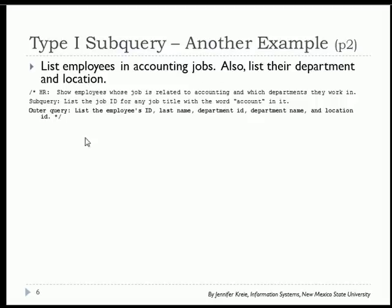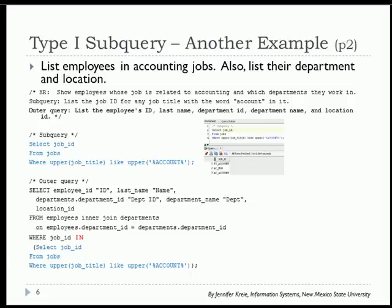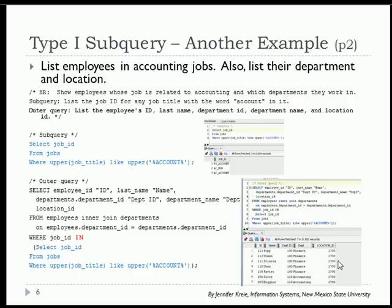In the second part, we do the outer query where we list the employee's ID, last name, department ID, name, and location ID. I take that subquery from the previous slide and embed it in the where clause. The outer query works with employees and departments, and I do a where clause looking at job_ID in the employee table comparing it against job_ID from the subquery, which gave us a list of three. The result is seven people working in accounting related jobs, some in finance and some in accounting.